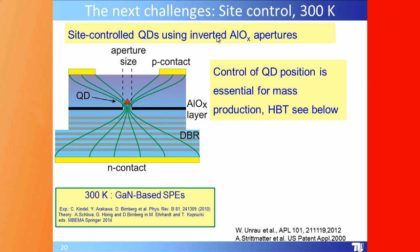The next challenge is site control. You can invert the VCSEL process: instead of growing the active layer and then depositing an aluminum oxide aperture on top, you do it the other way around. A strain field on top of the aluminum oxide layer attracts indium atoms, so the quantum dot forms right on top of the aperture, giving control of quantum dot position — essential for mass production.